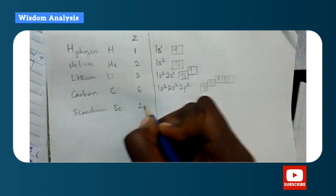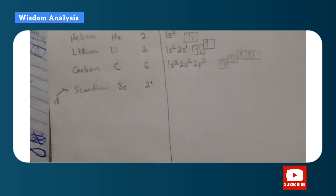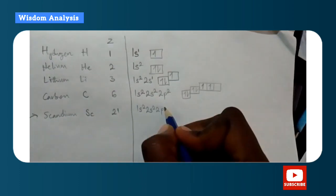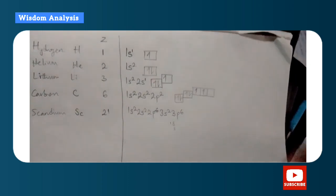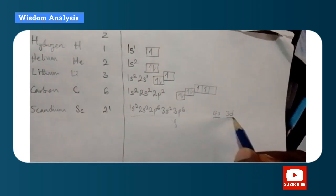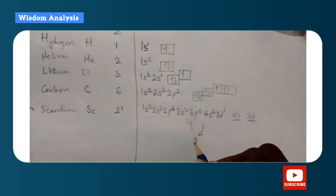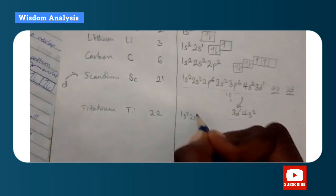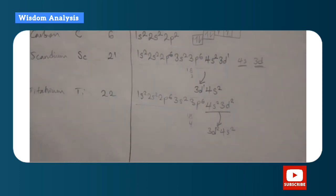For scandium (Z=21), a transition element in the d-block: 1s², 2s², 2p⁶, 3s², 3p⁶ gives 18 electrons, needing 3 more. We fill 4s first (lower energy), then 3d: so 4s², 3d¹ — which can also be written as 3d¹, 4s². For titanium (Z=22): similarly 4s², 3d² or rearranged as 3d², 4s².